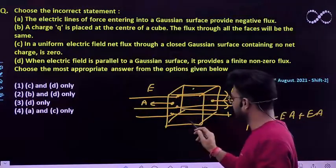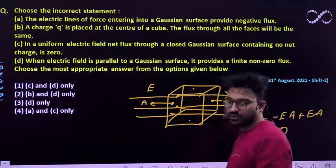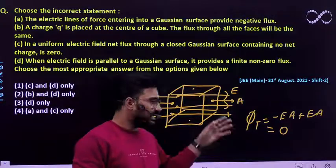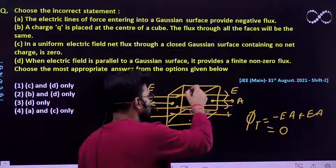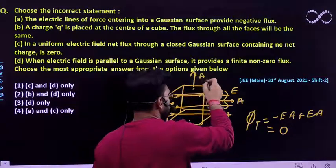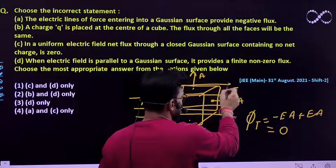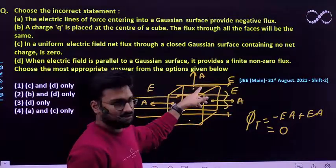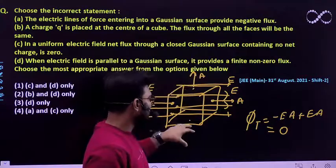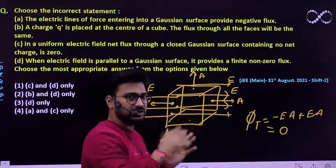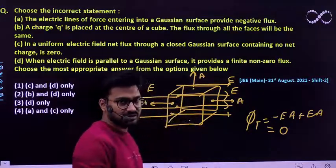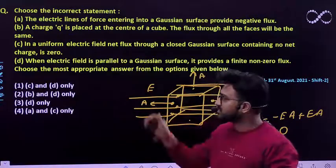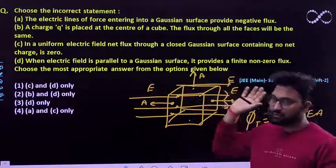The upper end, lower end, and side faces won't contribute to the flux, because the area vector of those faces is perpendicular to the direction of the electric field. Again, cos(90°) is zero. So the upper, lower, and side areas won't contribute to the electric flux. So statement C is also true.